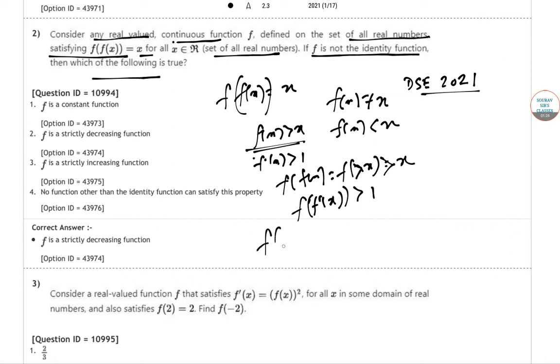Now, if f(f(x)) = x, let's take the first-order derivative. This gives us f'(f(x)) · f'(x) = 1.